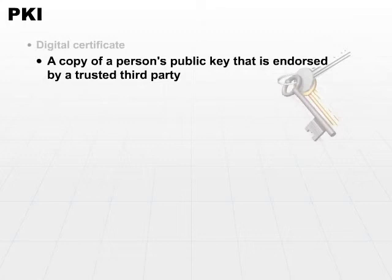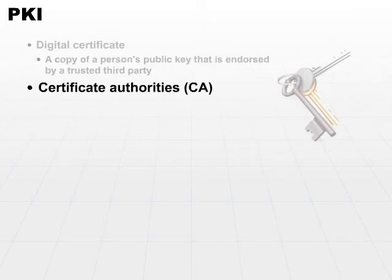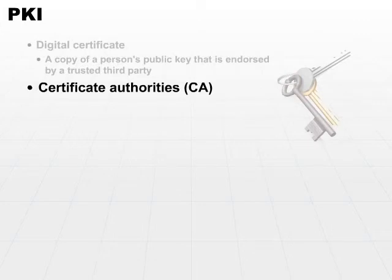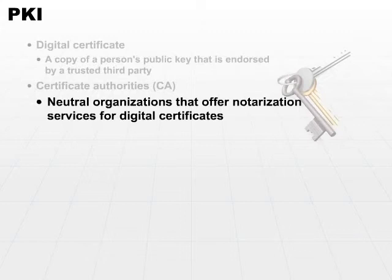These trusted third parties are called certificate authorities. The certificate authority, or the CA, is nothing more than some neutral organization that offers notarization services for digital certificates. Basically, these are well-known entities that act as repositories for public keys in the form of a digital certificate.